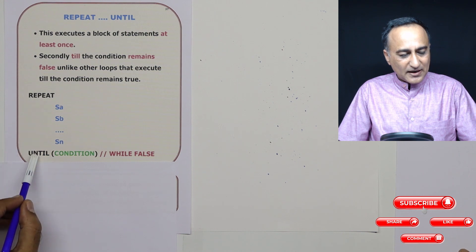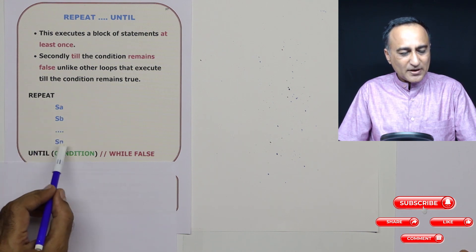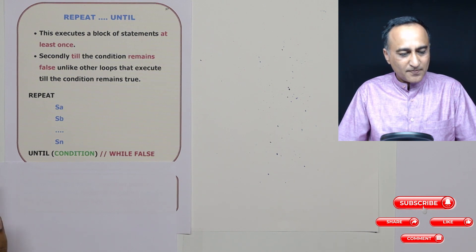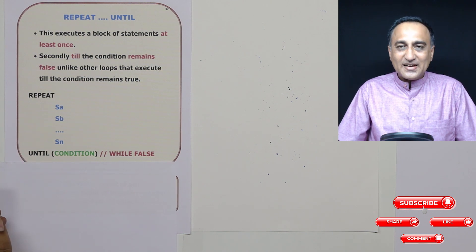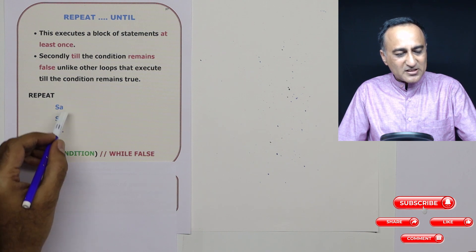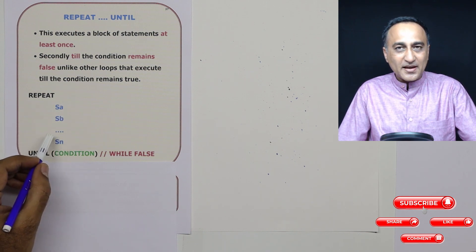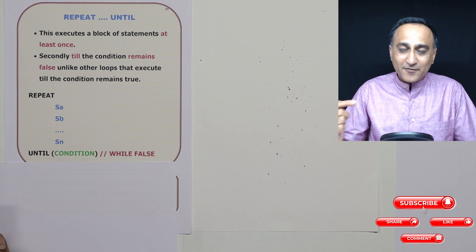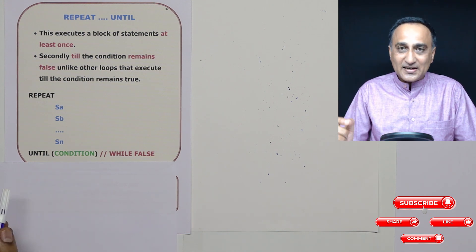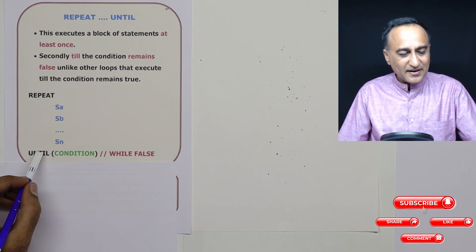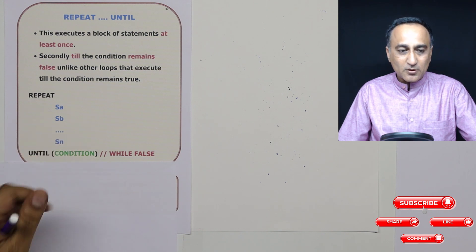The syntax has repeat and until, then the condition, and SA to SN represent the instructions or statements in an algorithm. For example, suppose the condition is number equal to zero. So as long as I am not entering zero, this body of the loop is going to repeatedly execute. The minute I enter zero, this condition becomes true. As long as the condition is false, it will continue to execute the statements between repeat and until; the minute the condition becomes true, it will come out of the body of the loop.